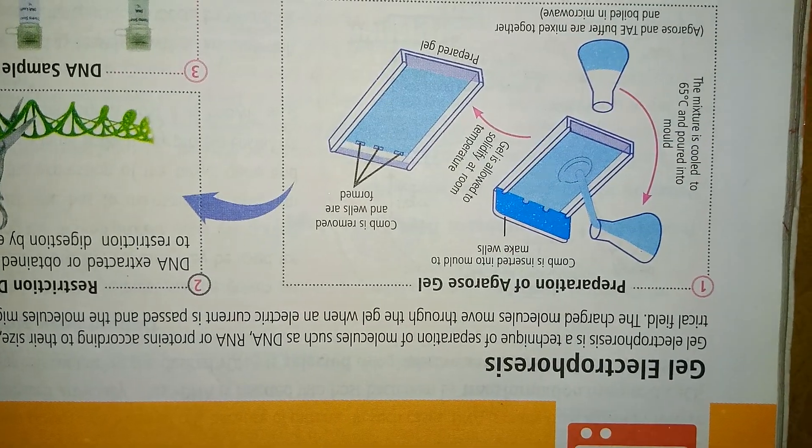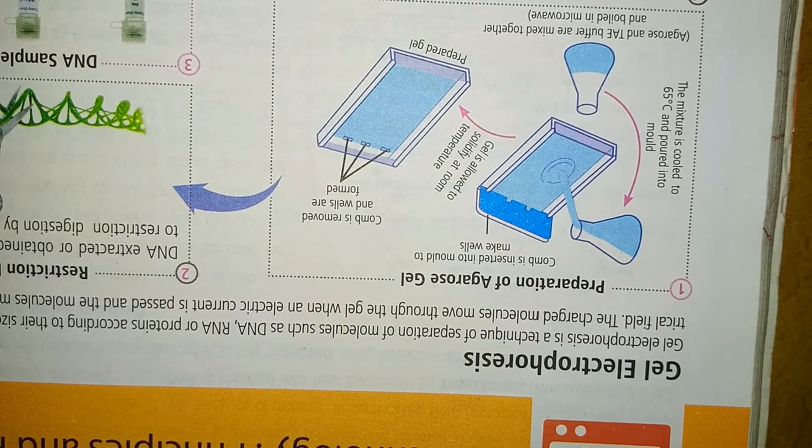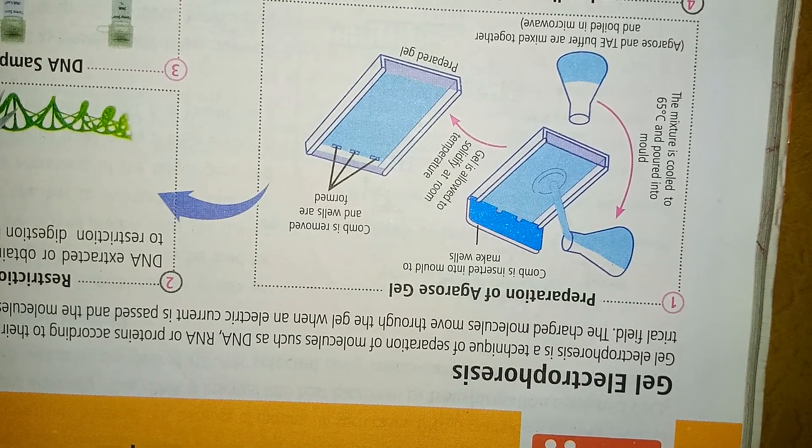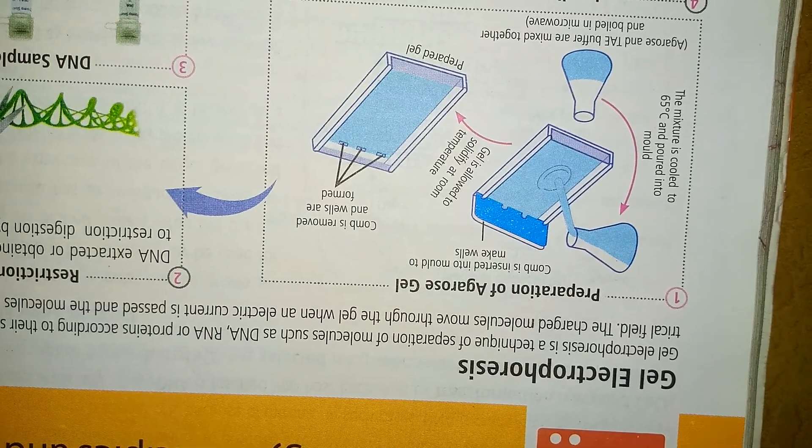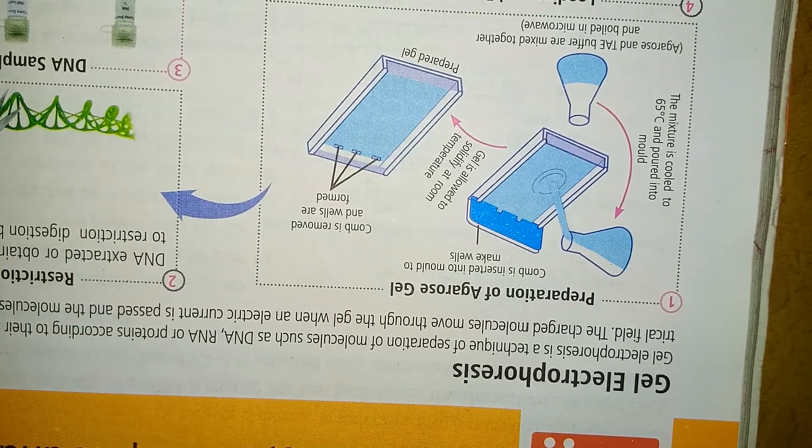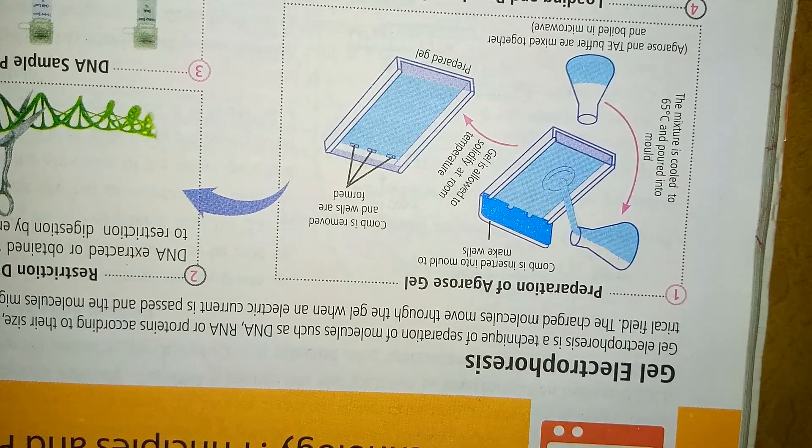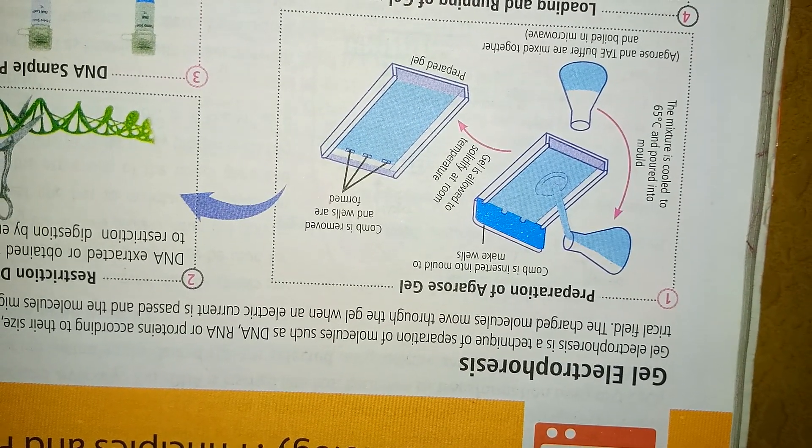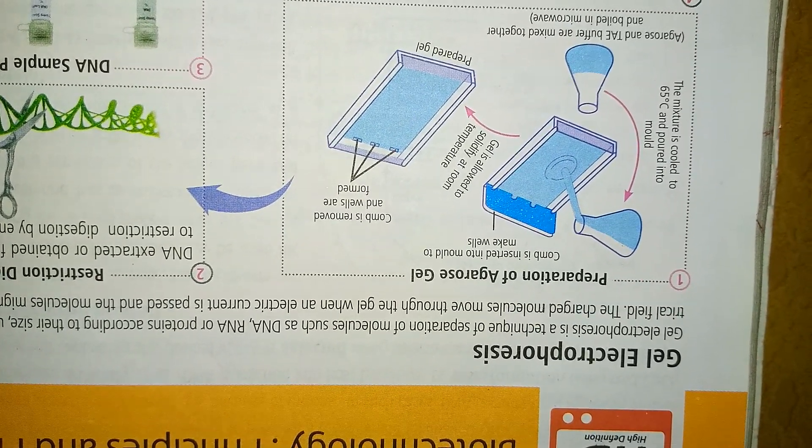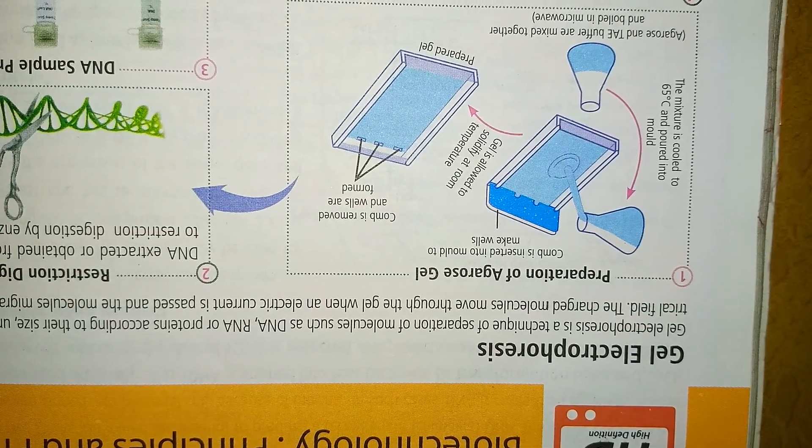The first part is media preparation of agarose gels. A comb is inserted into the mold. After it gels, it is allowed to solidify at room temperature. The comb is removed and wells are formed. Agarose and TAE buffer are mixed together and boiled in the microwave.